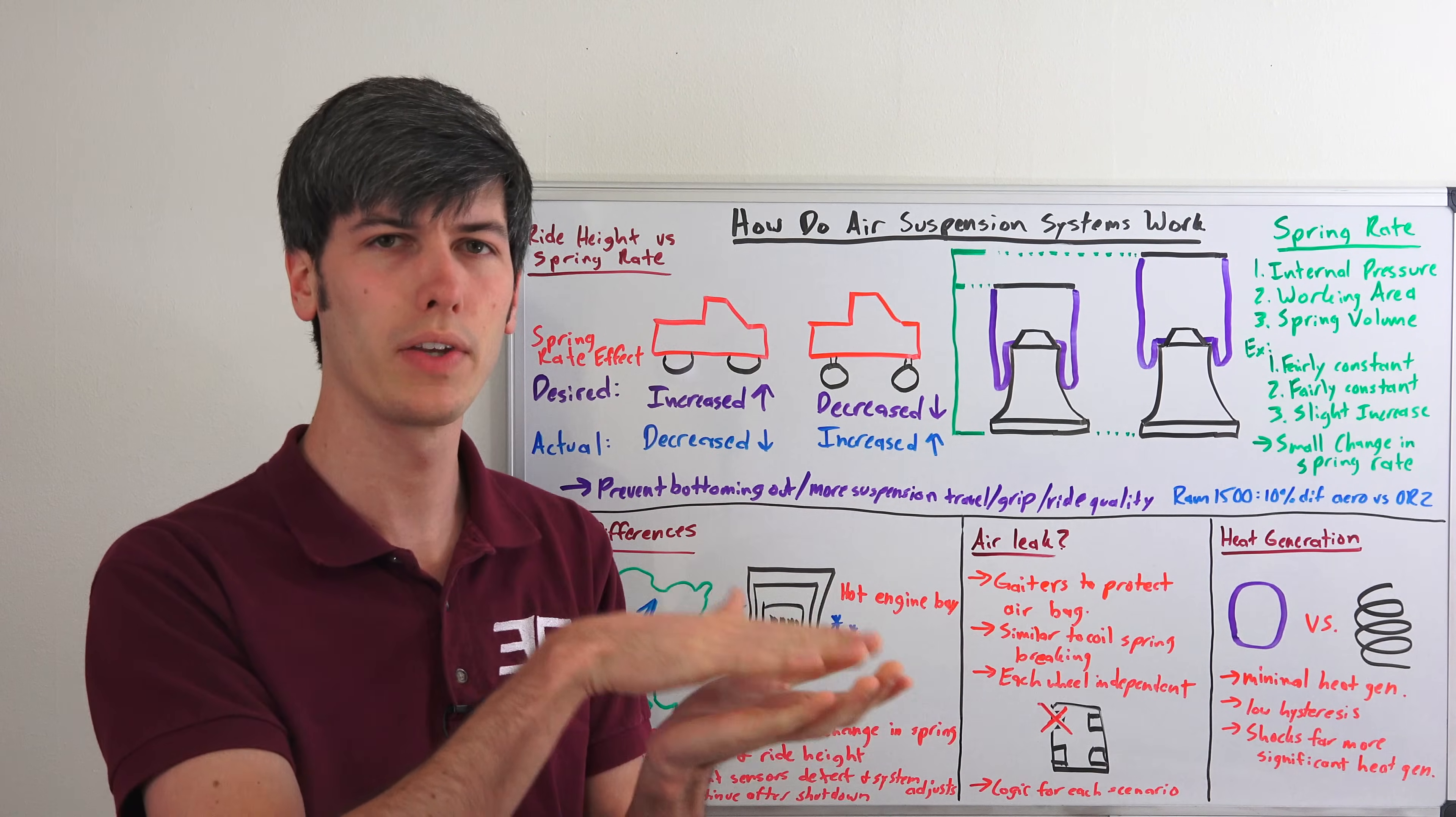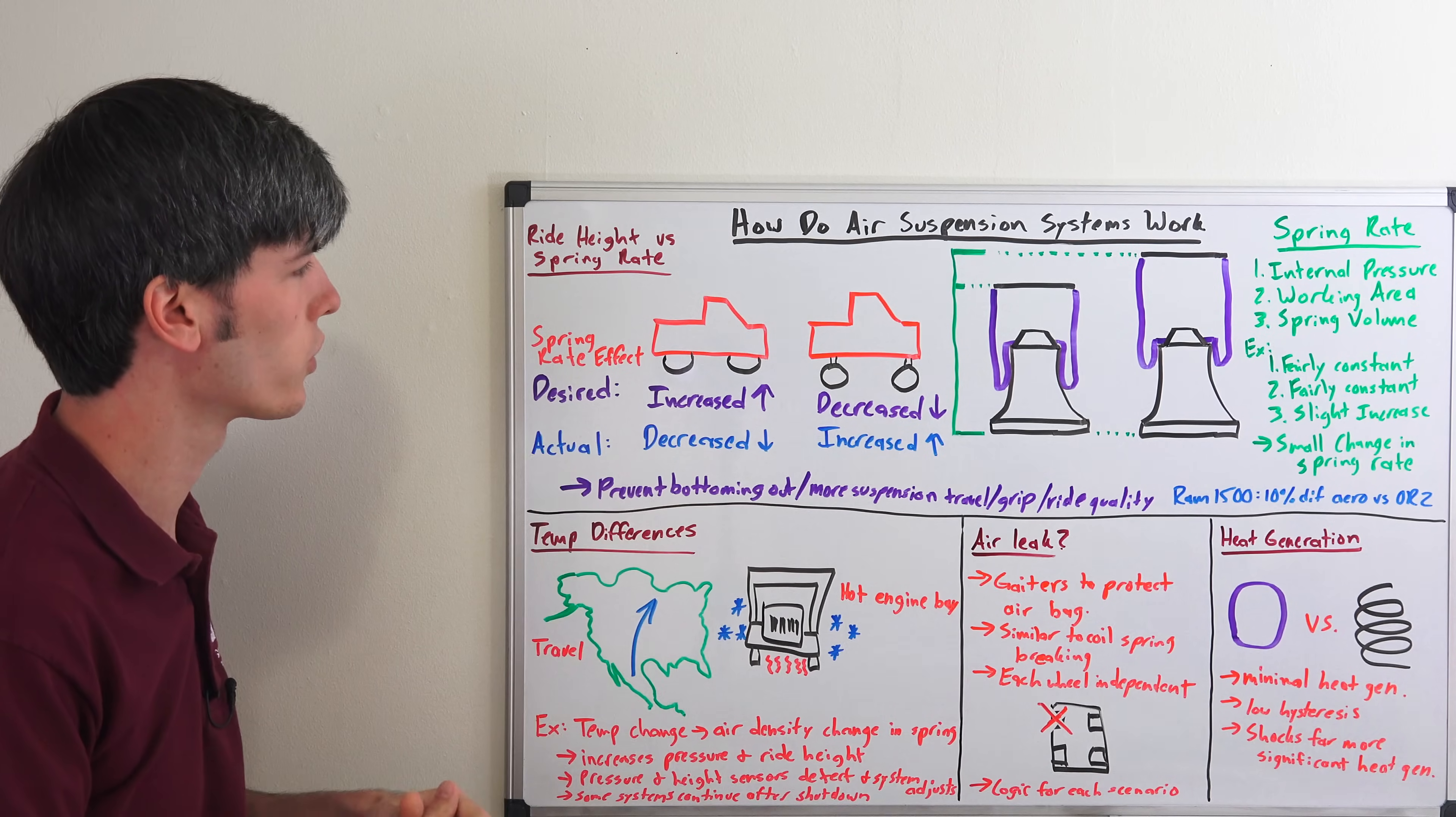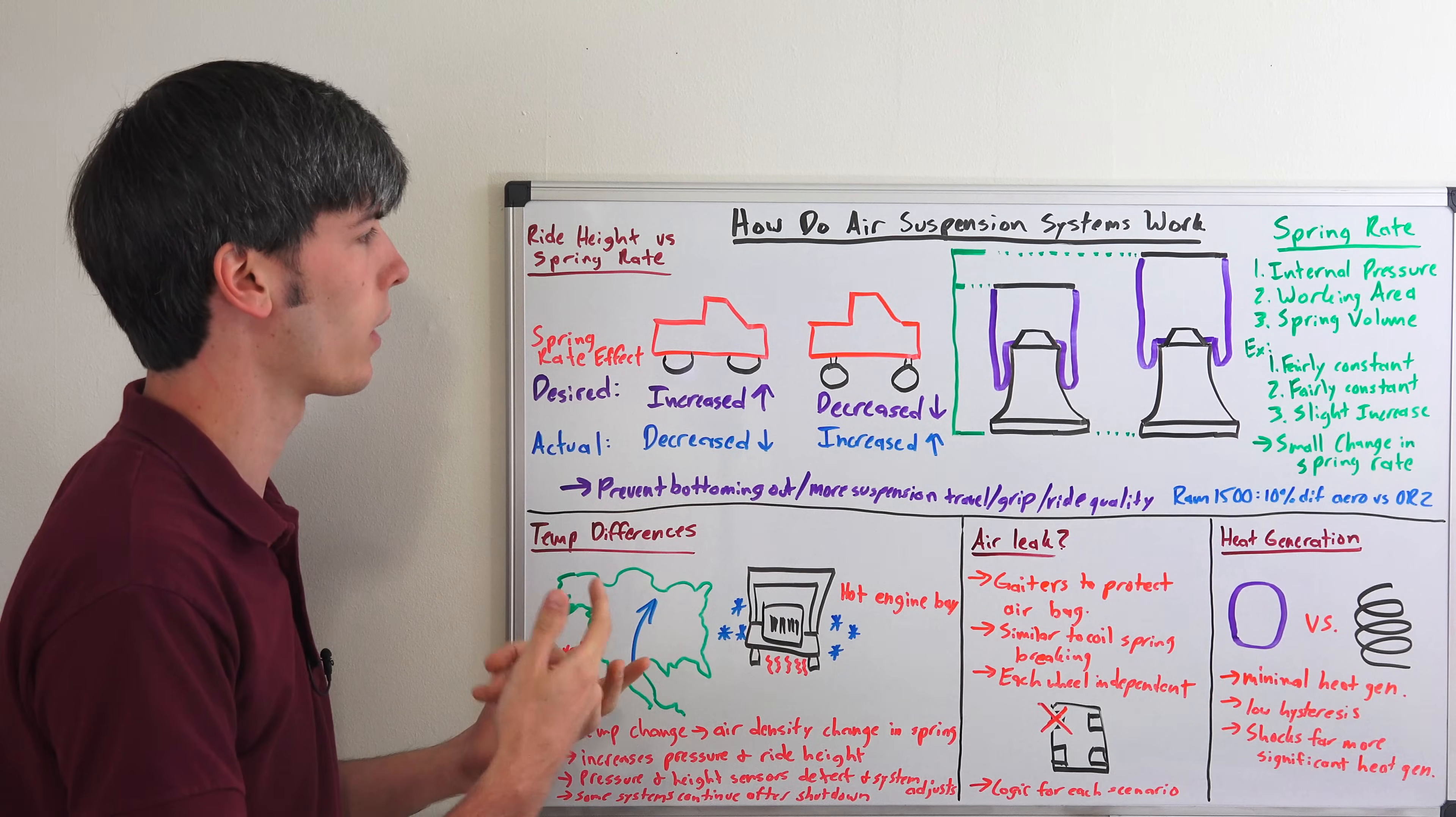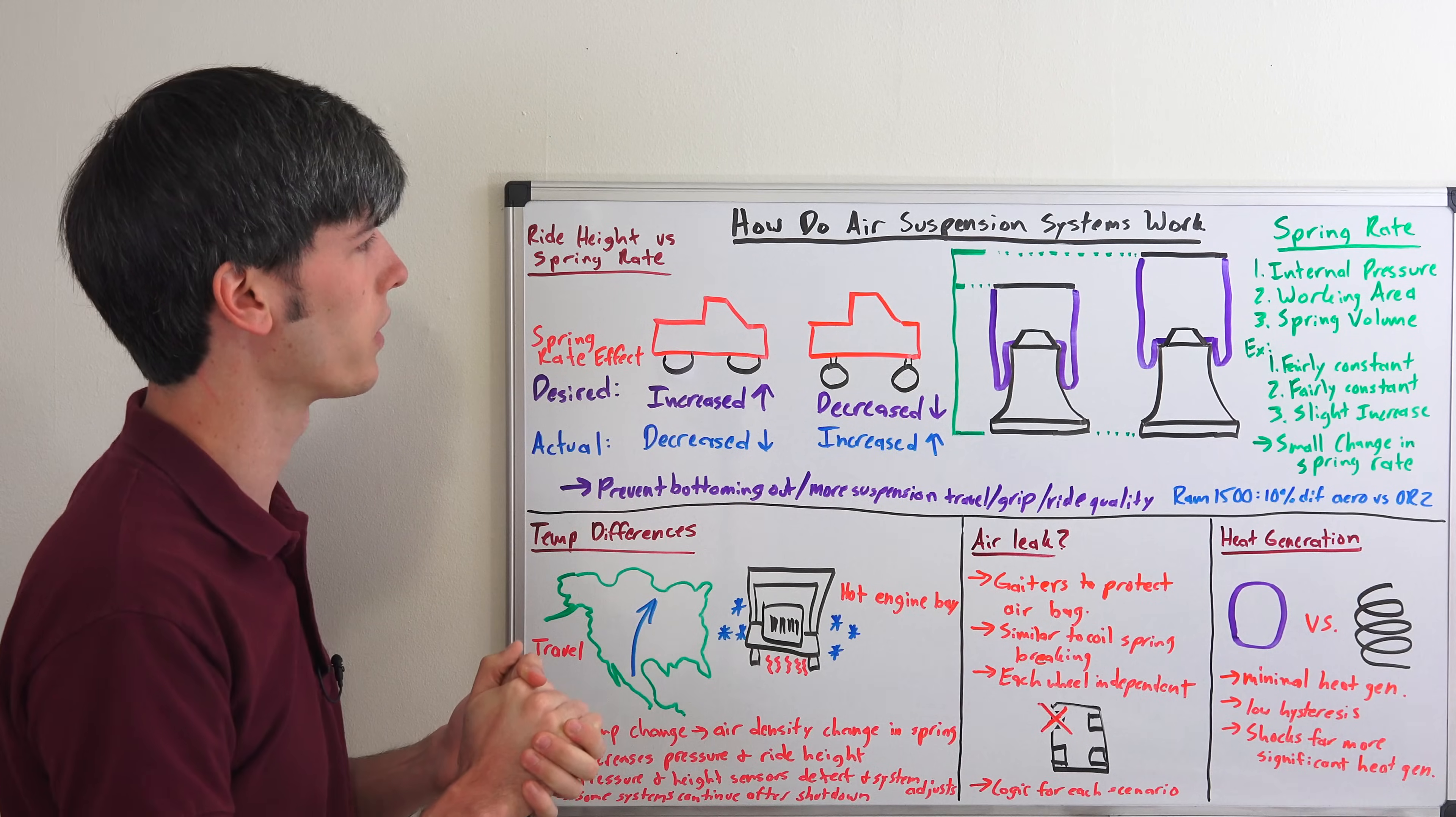Because ideally if you have a low vehicle you want to have a higher spring rate so that vehicle doesn't bottom out. But if you have a higher vehicle, if you increase the suspension travel and the ride height of that vehicle, the ground clearance, you typically are going to want a softer spring rate that allows you to have better ride comfort, more mechanical grip, more suspension travel as mentioned. So this is kind of something that you would seem would be opposite of how an air suspension system works.